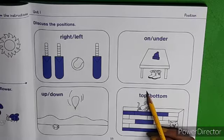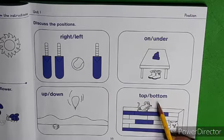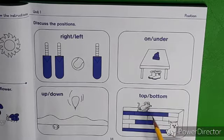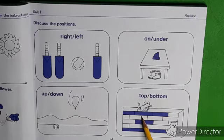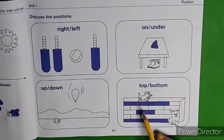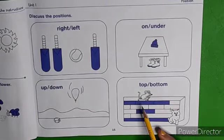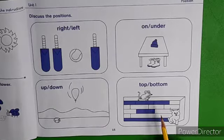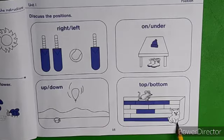Top — ऊपर. Bottom — नीचे. Where is the rat? The rat is at the top of the wall. Where is the cat? The cat is at the bottom of the wall.